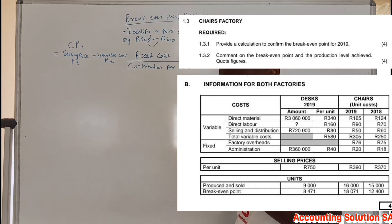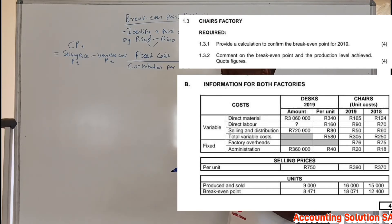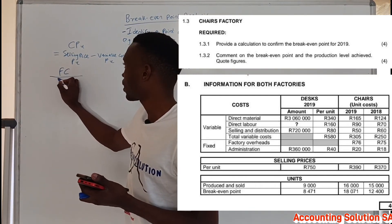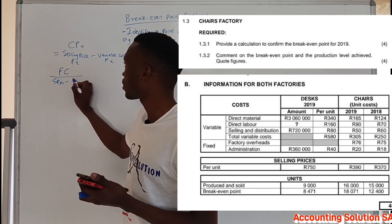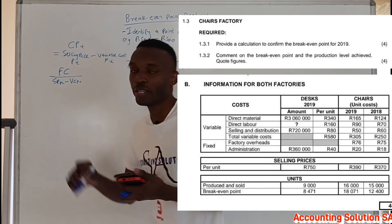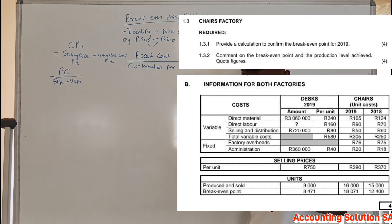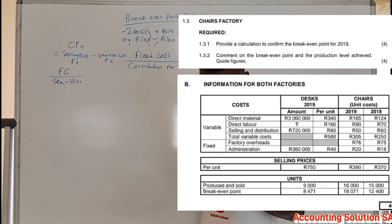Let's check the example — question 1.3. A chess factory is required to: number one, provide a calculation to confirm the break-even point for 2019 for Max. In other words, from the information given you are going to confirm whether the break-even point is correct. Now we have the formula, so we need to look for fixed cost, then divide by selling price per unit minus variable cost per unit, which is contribution per unit. Let's look at the chess data.